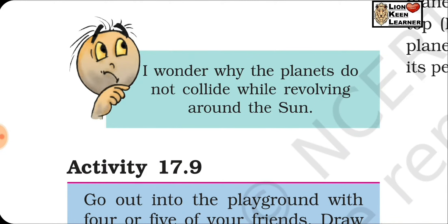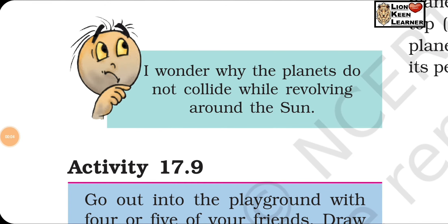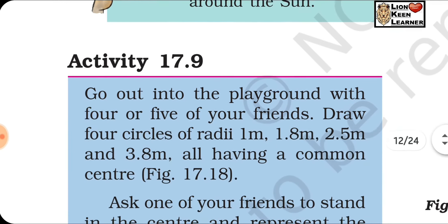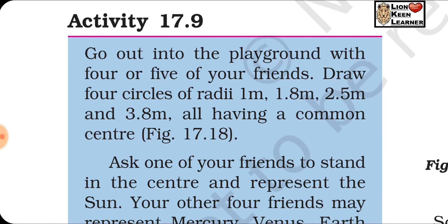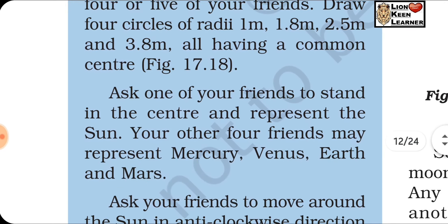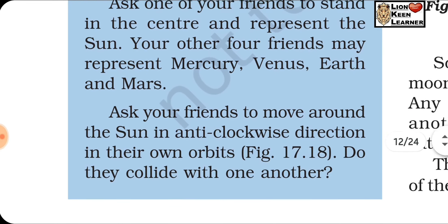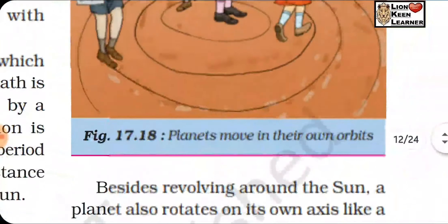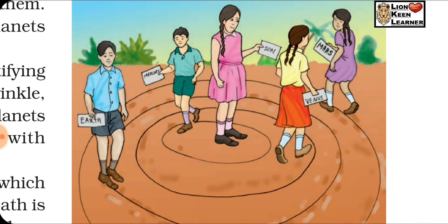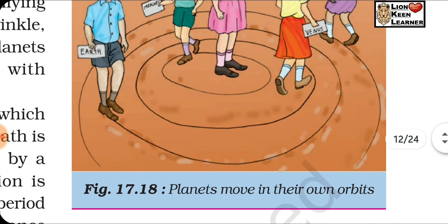Why do the planets not collide while revolving around the sun? Activity 17.9: Go out into the playground with four or five friends. Draw four circles of radii 1 m, 1.8 m, 2.5 m, and 3.8 m, all having a common center. One friend stands in the center representing the sun; others represent Mercury, Venus, Earth, and Mars. Ask them to move around in anti-clockwise direction in their own orbits — they will not collide, as each moves along their own fixed line, just as shown in figure 17.18.